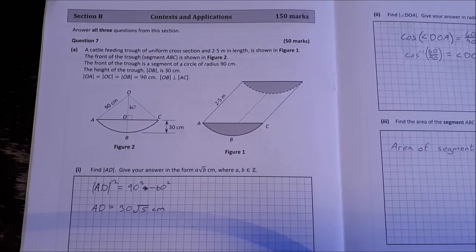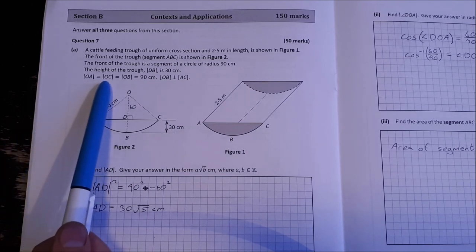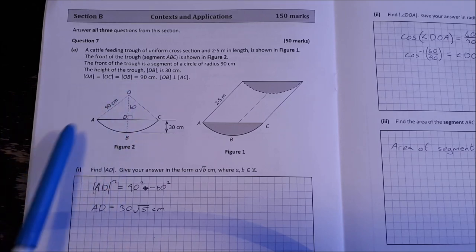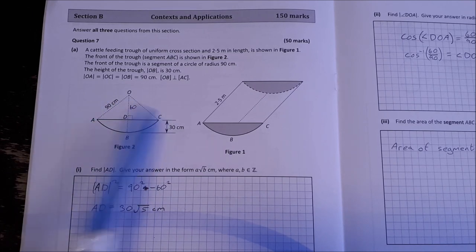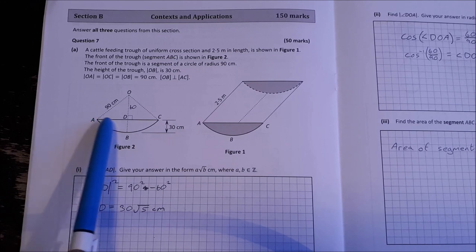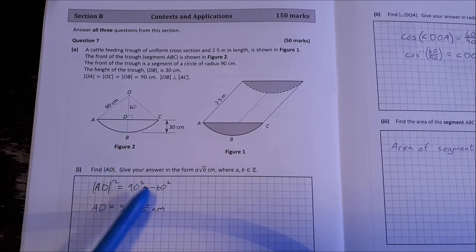Section B. Question 7. A cattle feeding trough of uniform cross section and 2.5 meters in length is shown in figure 1. The front of the trough segment ABC is shown in figure 2. The front of the trough is a segment of a circle of radius 90 centimeters. The height of the trough is 30 centimeters. The height OA is equal to OC is equal to OB and is equal to 90 centimeters. OB is perpendicular to AC. Find the length AD.